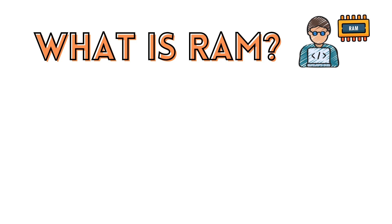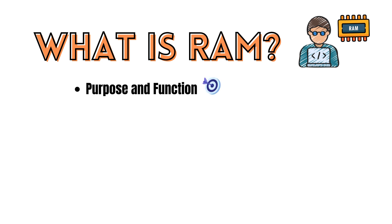Here's a more detailed explanation of RAM in a computer system. RAM serves as a temporary storage location for data that the CPU needs to access quickly and frequently. When you run a program or open a file, the relevant data is loaded from long-term storage, such as a hard drive, into the RAM.